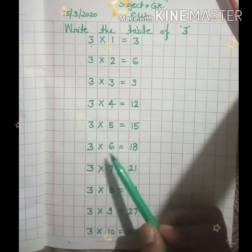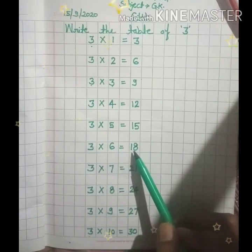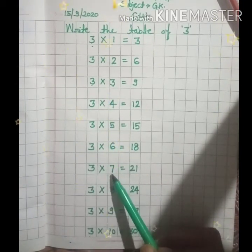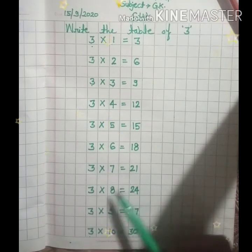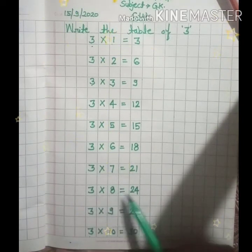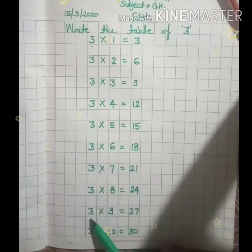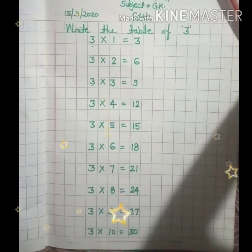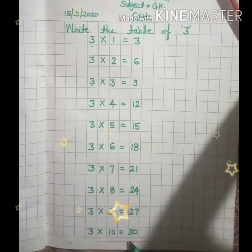3-6-18, 3-7-21, 3-8-24, 3-9-27, 3-10-30.